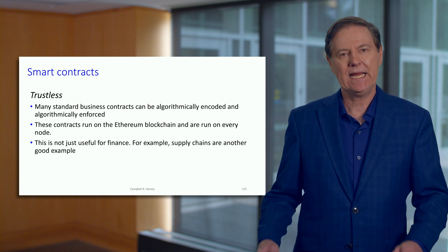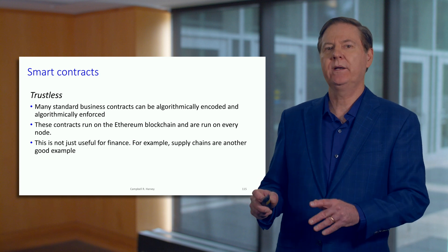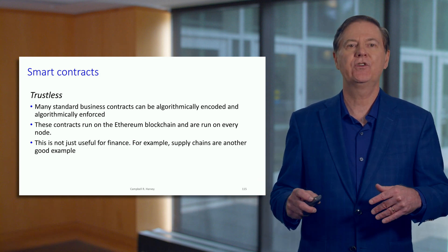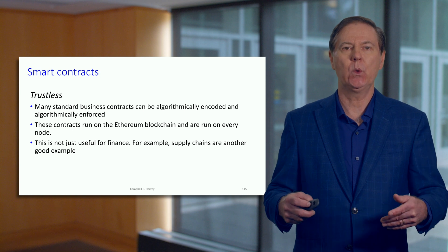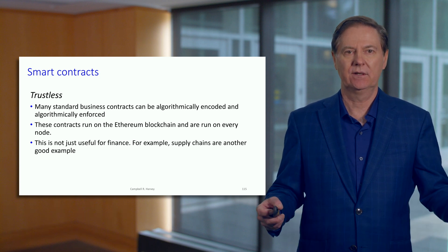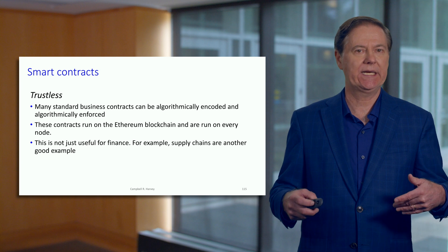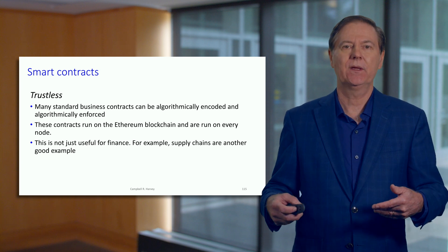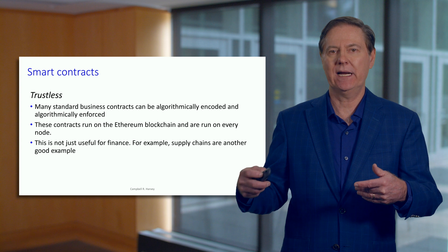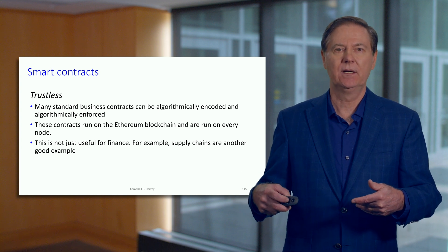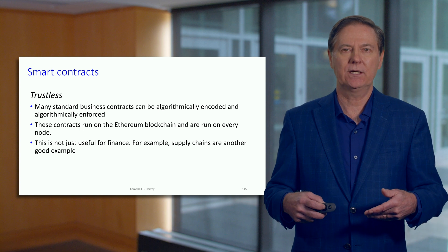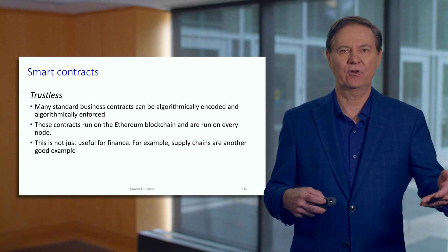When you run the smart contract, it runs on every node in the Ethereum network. So it is redundant, just like every transaction is recorded in the Ethereum network on every single copy of the Ethereum blockchain — and the same thing for Bitcoin in terms of transactions.